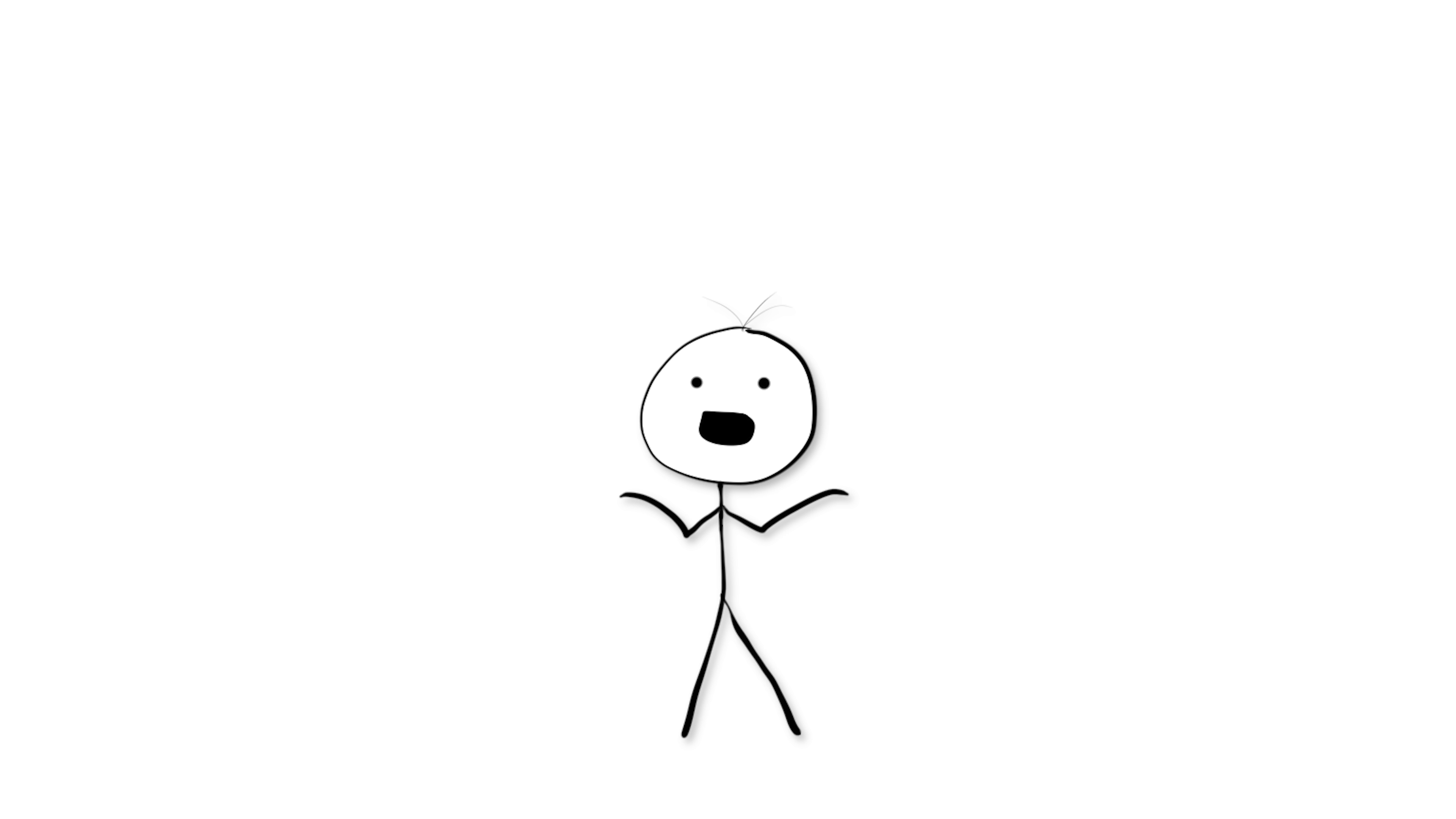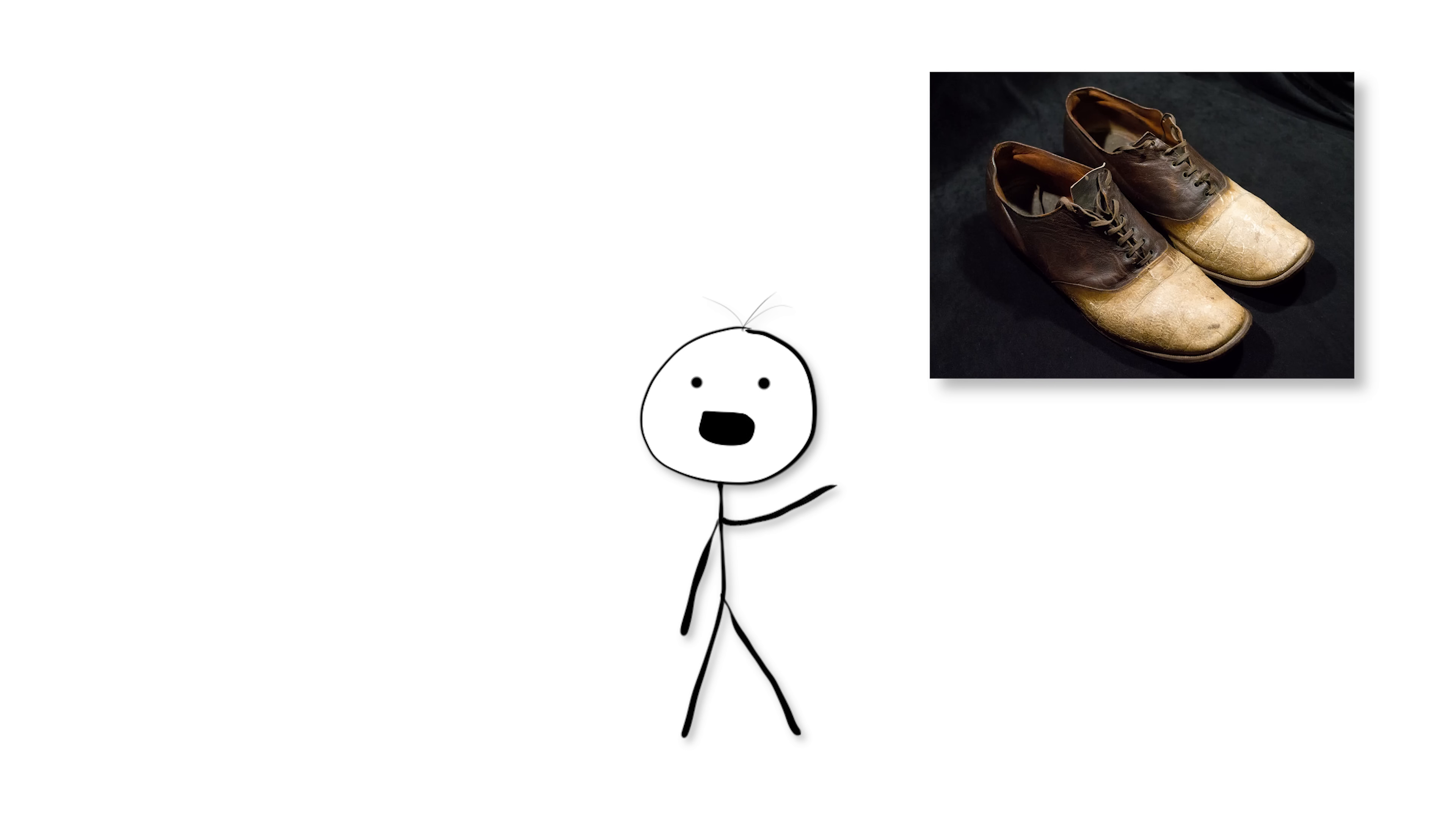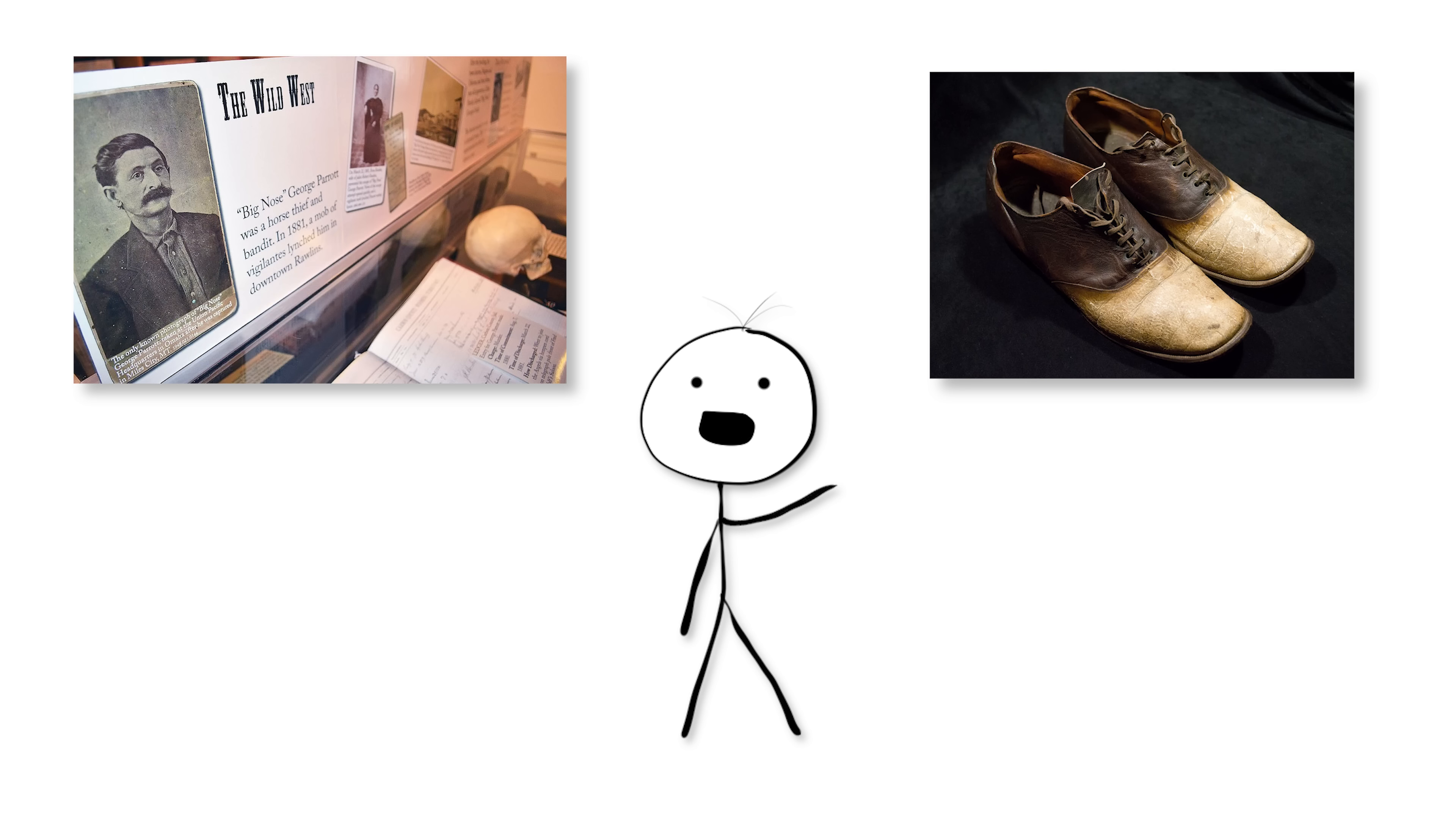It turns out the group was an angry mob. George's skull was then used as an ashtray for many years, and his skin was used for a pair of shoes. Both his skull and shoes are now proudly displayed in museums.